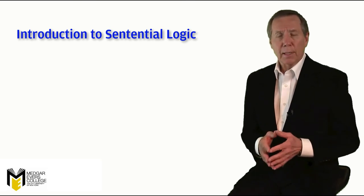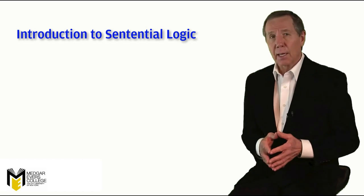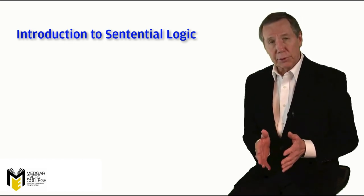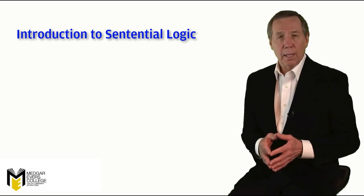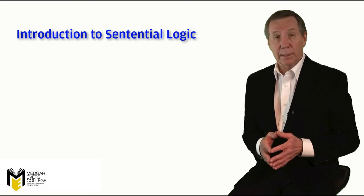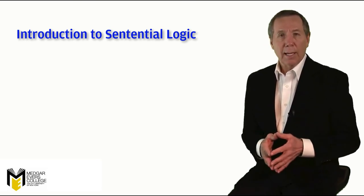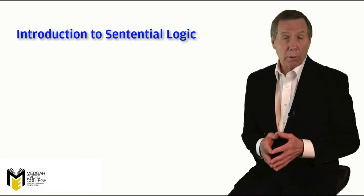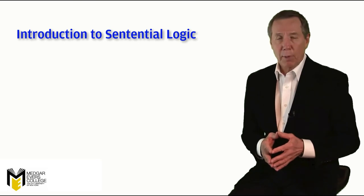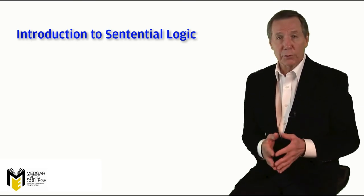To do this, we'll need a method for formalizing both the content and the syntax of the sentences we use in English in order to achieve the clarity and precision we desire. Arguments are composed of declarative sentences, and sentences can be problematic in logic because sentences are often ambiguous — they can have more than one meaning or refer to multiple states of affairs. Ambiguous sentences pose problems for logicians because they can be true in one sense and false in another.